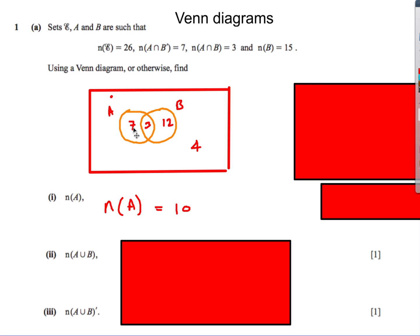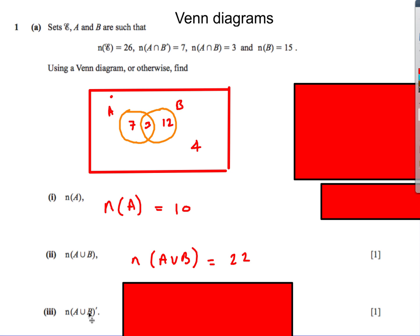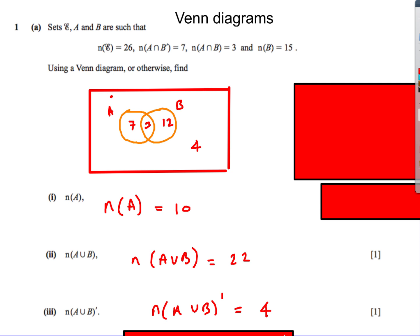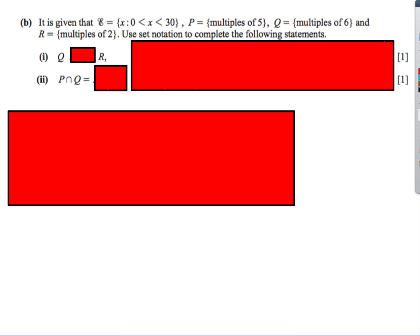Be careful — sometimes '7' might literally be the number 7, but here it's the number of elements. So n(A) = 7 + 3 = 10. For part (ii), n(A ∪ B) = 7 + 3 + 12 = 22. And n(A ∪ B)' — the complement, the region outside A ∪ B — is just 4.